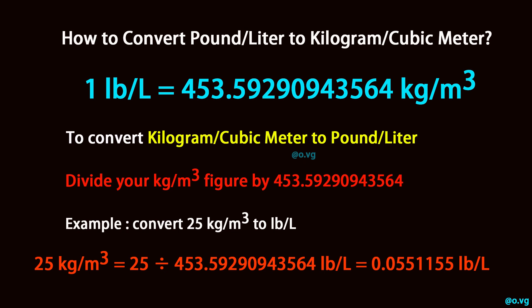Example: convert 25 kilogram per cubic meter to pound per liter. 25 kilogram per cubic meter equals 25 divided by 453.59290943564 pound per liter, which equals 0.0551155 pound per liter.